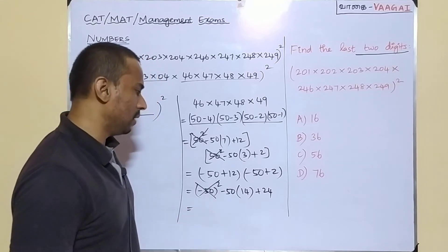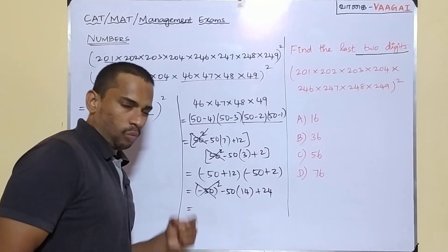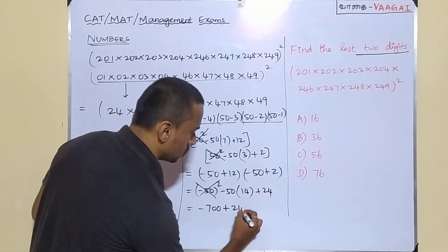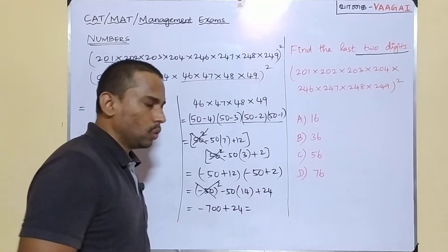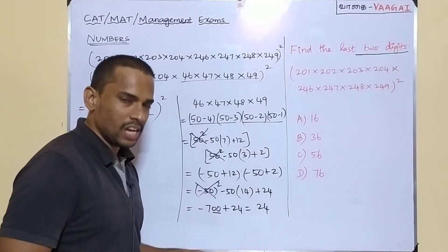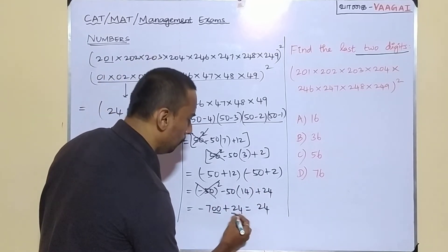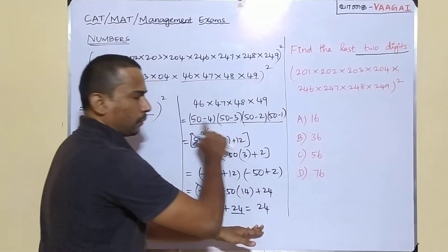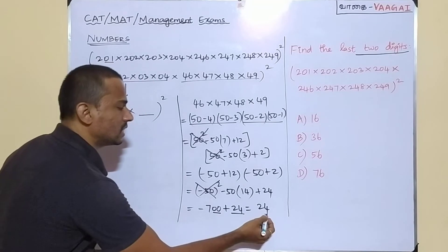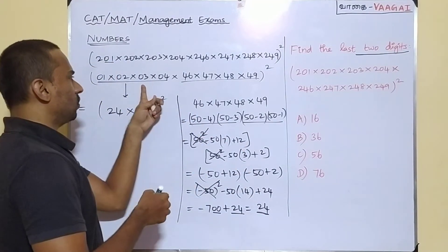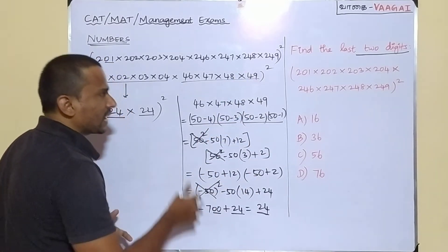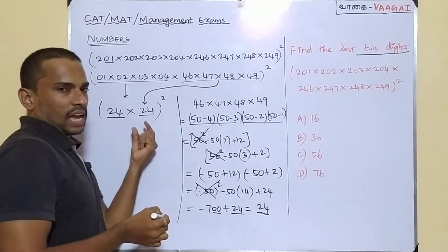So the product of 46 × 47 × 48 × 49 also ends in 24 for its last two digits. The first four numbers gave us 24 and after all these calculations the last two places of the second group also give us 24. Our question now simply becomes (24 × 24) whole square.